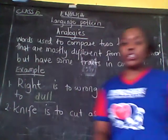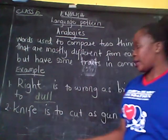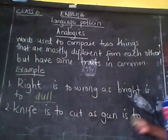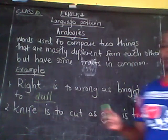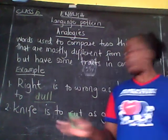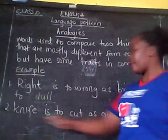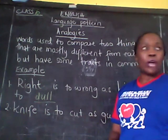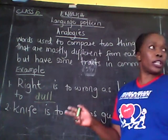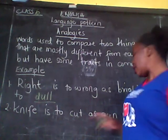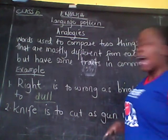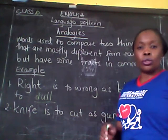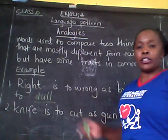We also have another one: knife is to cut, as a gun is to. You must know the relationship between the knife and the cutting — the action. And you must know the relationship between the gun and what it will have to do. So knife is to cut.